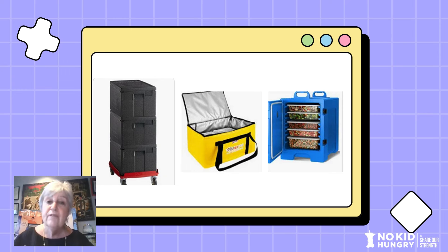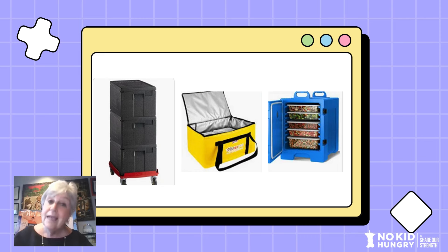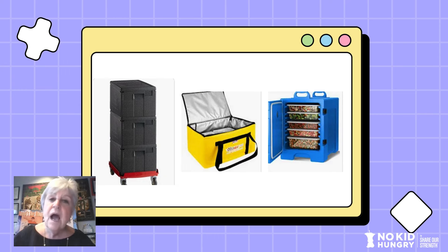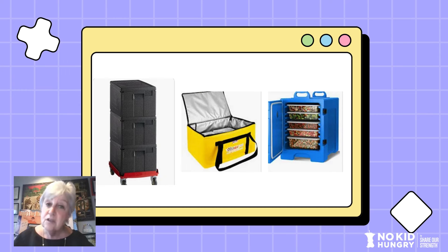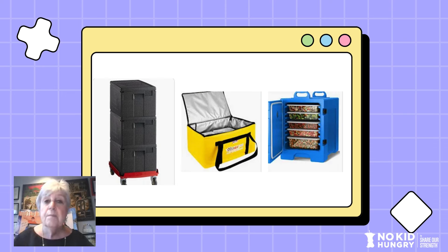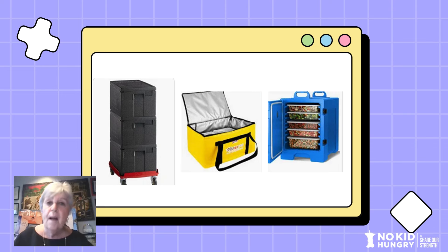I strongly suggest that while you don't have to have brand new equipment to operate a successful Breakfast After the Bell program, it is nice to be able to market your program with new pieces. I suggest you look at partnerships. At one point I did get funding from Share Our Strength to buy kiosks that we used in the hallways of our buildings. For the insulated bags — looking at the yellow one in the middle — I always got our bags from the Dairy Council. See what other organizations, like Healthier Generation, might be able to support purchasing of various pieces of equipment to support Breakfast After the Bell, as well as supporting other initiatives that you're trying to engage at your school or in your school district.